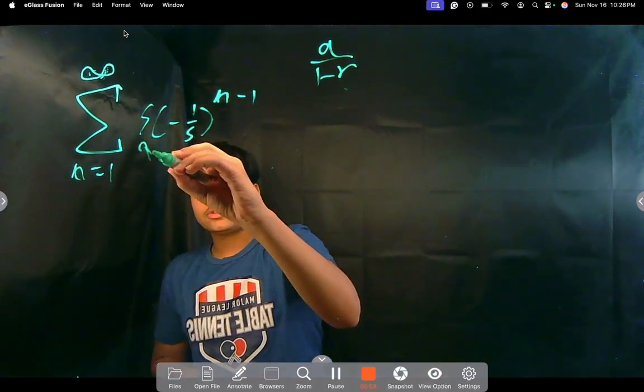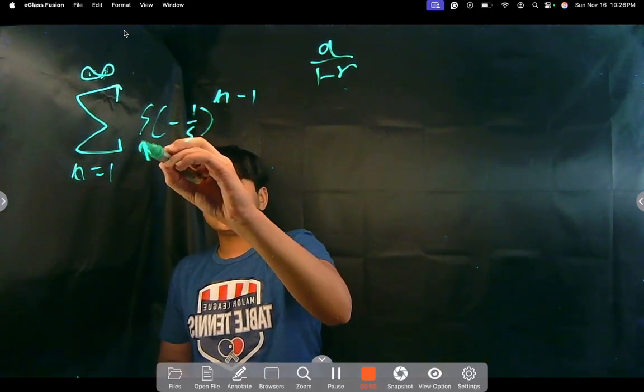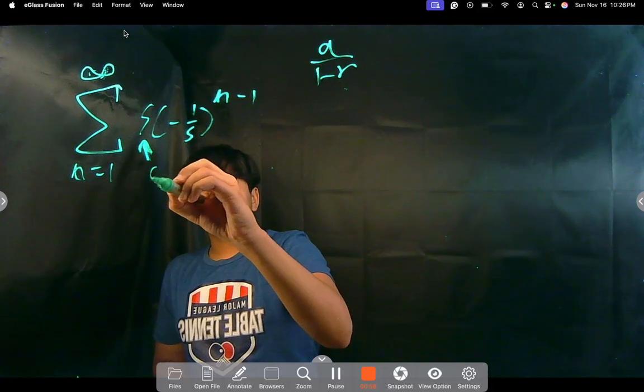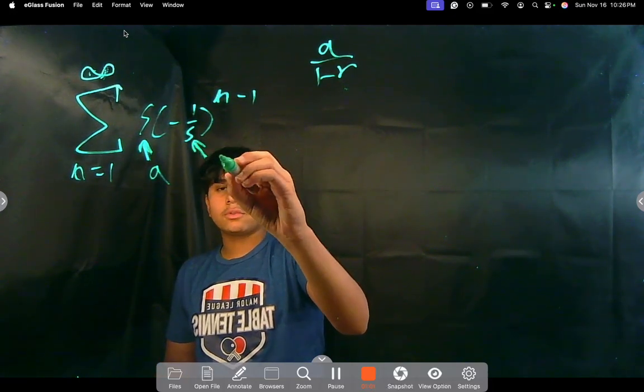where a is the first term, the leading term, 5, which is a. And then r is this term right here, negative 1 over 5.